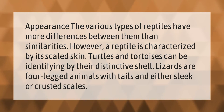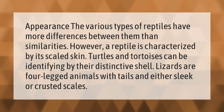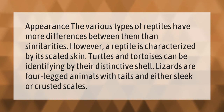The various types of reptiles have more differences between them than similarities; however, a reptile is characterized by its scaled skin. Turtles and tortoises can be identified by their distinctive shell. Lizards are four-legged animals with tails and either sleek or crusted scales.